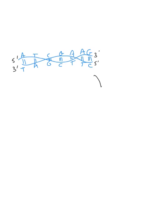If we fed that double helix into the black box that is a DNA sequencer, the sequencer reads each of the strands from five prime to three prime. So the DNA sequence information it returns always starts at the five prime end. For example, the top strand would read five prime ATGCTAG.